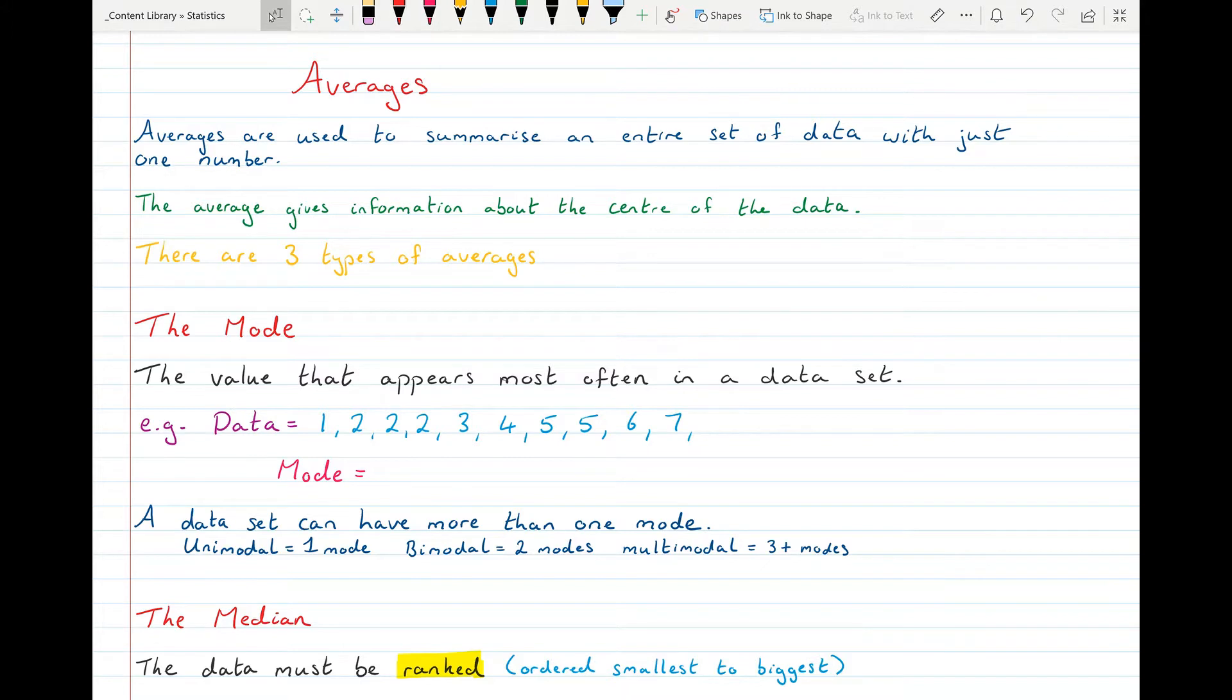The first one is the mode. So the mode is the value that appears most often in a data set. An example here is I have the data set 1, 2, 2, 2, 3, 4, 5, 5, 6, 7. So you can see that the number that appears most often in the data is the number 2. So we say that the mode is 2. It appears three times, but the value is 2.